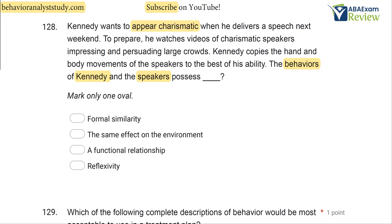Kennedy is trying to appear charismatic, so he's watching videos of speakers and copying hand and body movements. By copying those movements, does this guarantee Kennedy is charismatic? No, because Kennedy is just watching a video and imitating what he sees — there's no guarantee it's going to work. But we do know Kennedy's behavior looks like the speaker's behavior because he's copying what the speakers are doing. So what can we say? Formal similarity is how we can describe it.